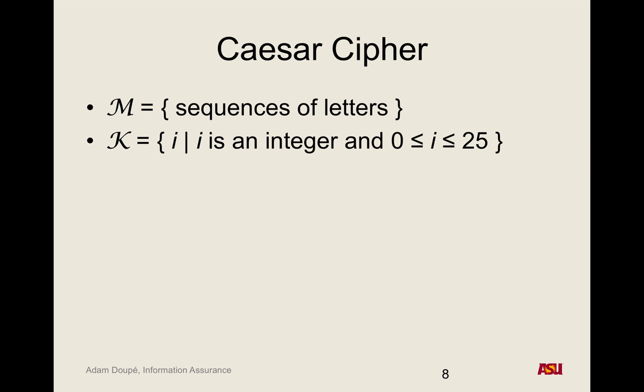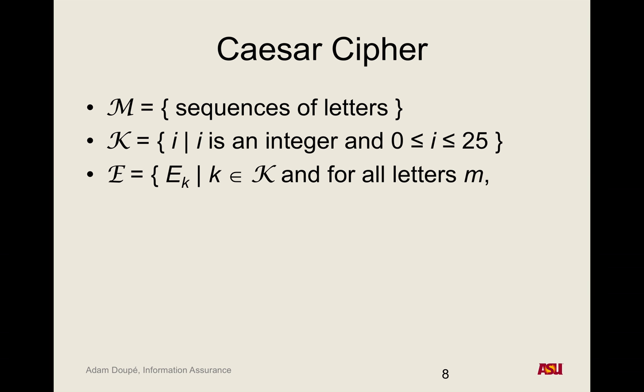So the key — if we're talking about the English language with 26 letters — means the set of possible keys is every integer from 0 to 25. To encrypt it, given a key K, for all letters M, you encrypt M as M plus K mod 26. That's the encrypted value. Why the mod 26? So when we reach the end, it goes back around. If your key is 3 and you're encrypting Z, that maps to C — you can do 25 plus 3 mod 26 equals 2, and 0 is A, 1 is B, C is 2.